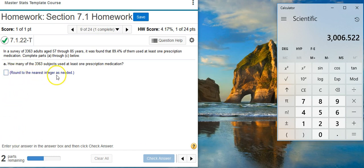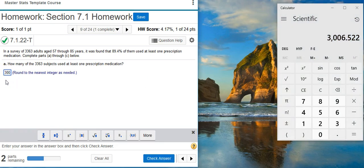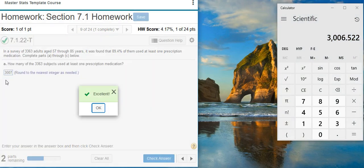Here our instructions say round to the nearest integer as needed. So I'm just going to follow the regular rules of rounding. Here I got point 5-2-2, that means I'm going to round this number up to 3,007. Excellent.